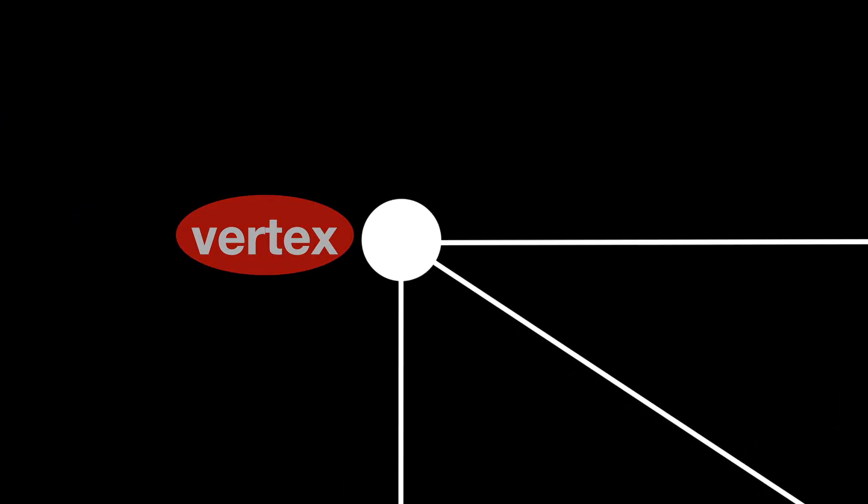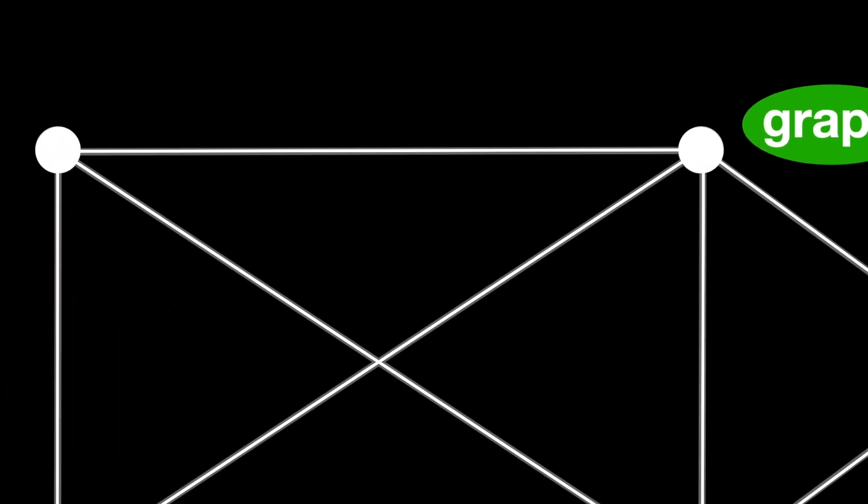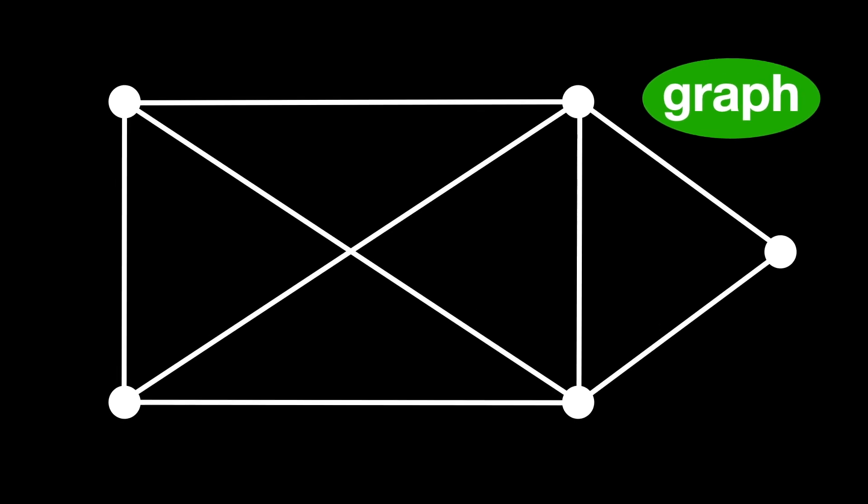These points are formally called vertices, and the lines edges. The diagram that results is called a graph, which we'll give the name G — you know, for graph.